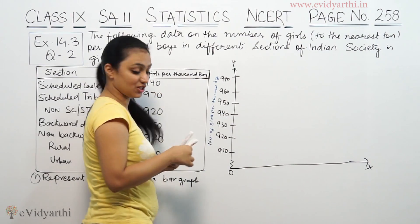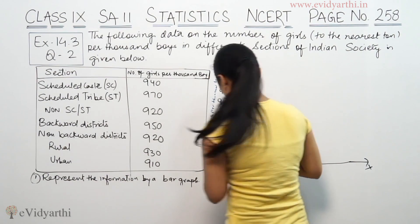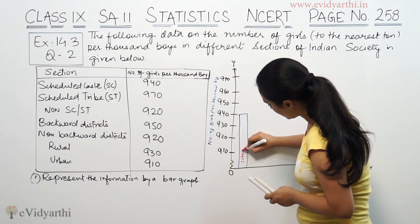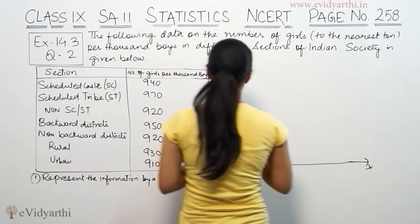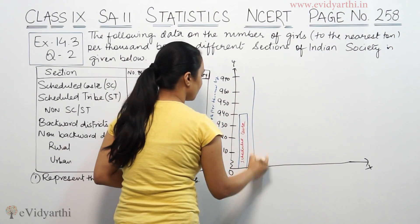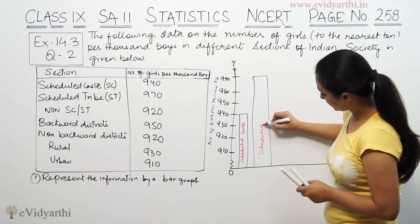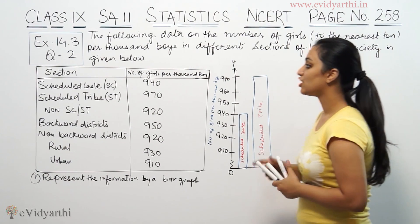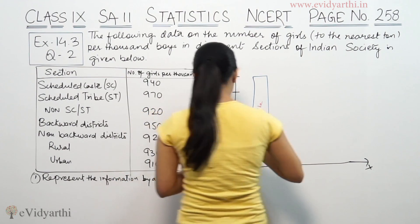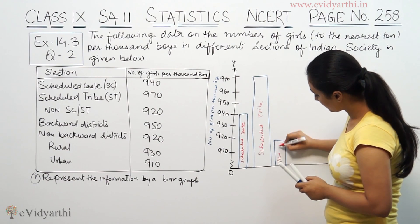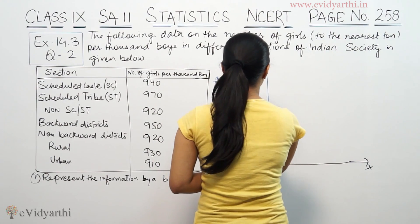Now plotting the bars: SC is 940, ST is 970. Non-SC/ST is 920 — that bar is placed at 920. Then backward districts is 950, and that bar is placed at 950.